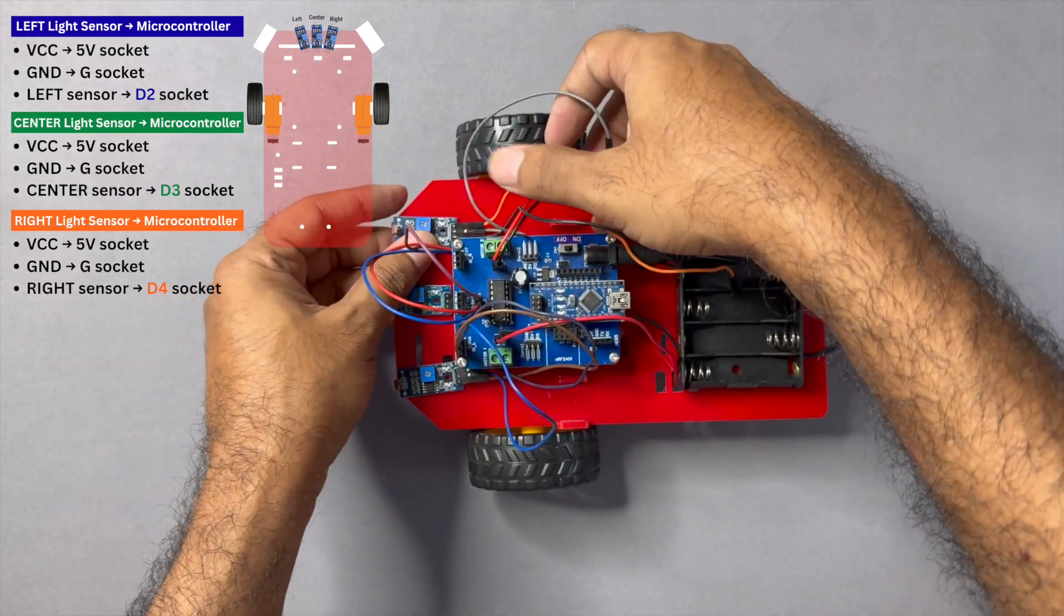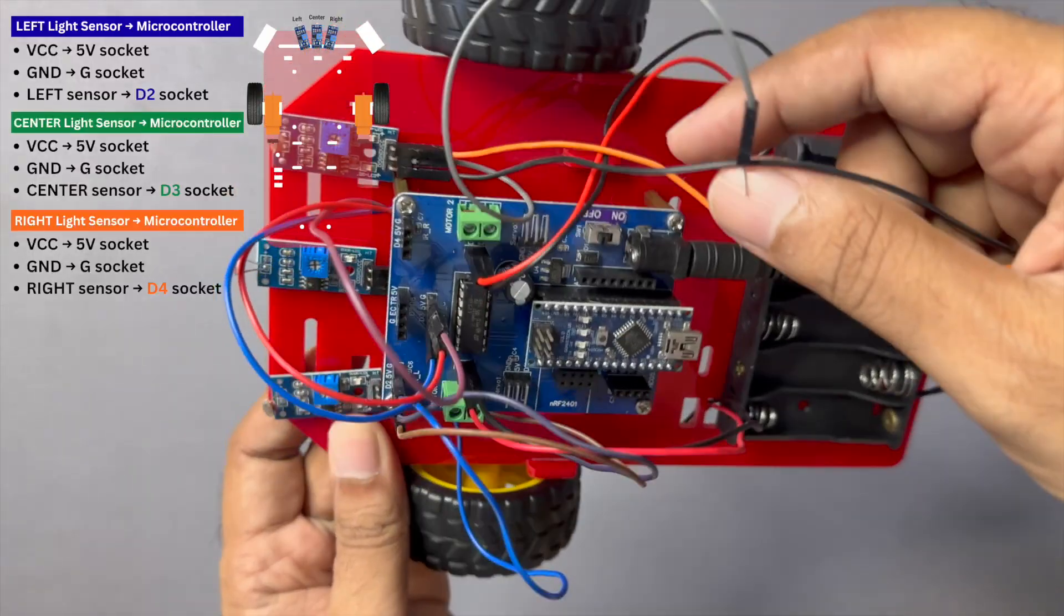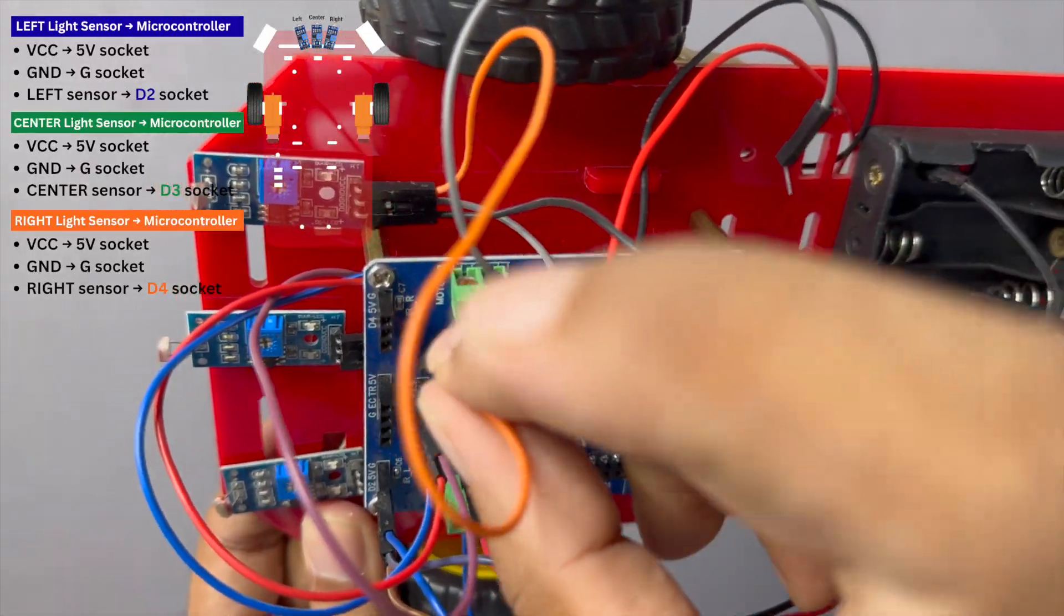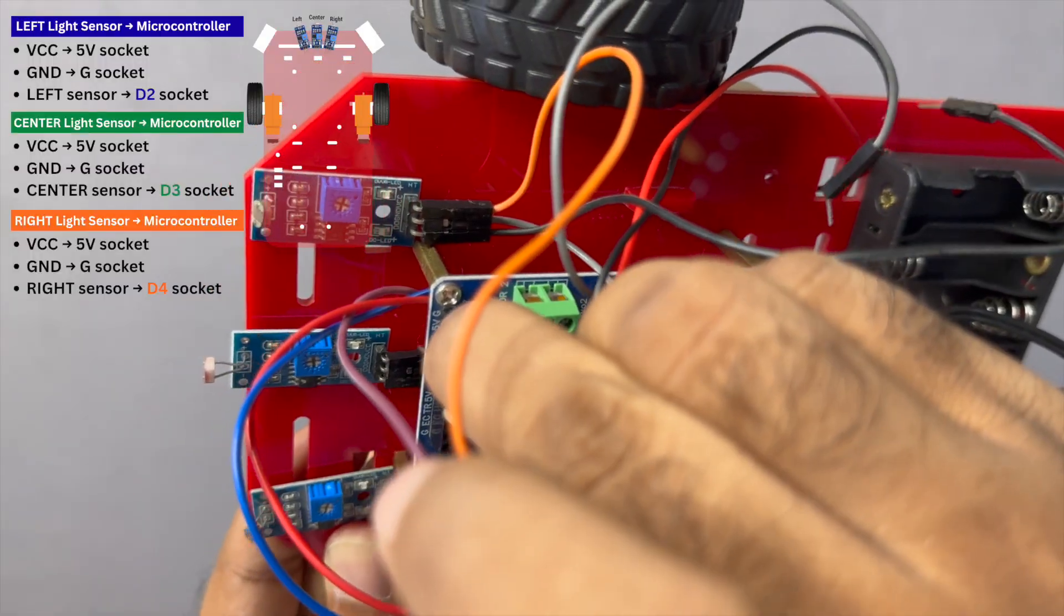For the right sensor, connect the OUT pin to D4 on the microcontroller and connect the 5V and GND pins to their corresponding pins.